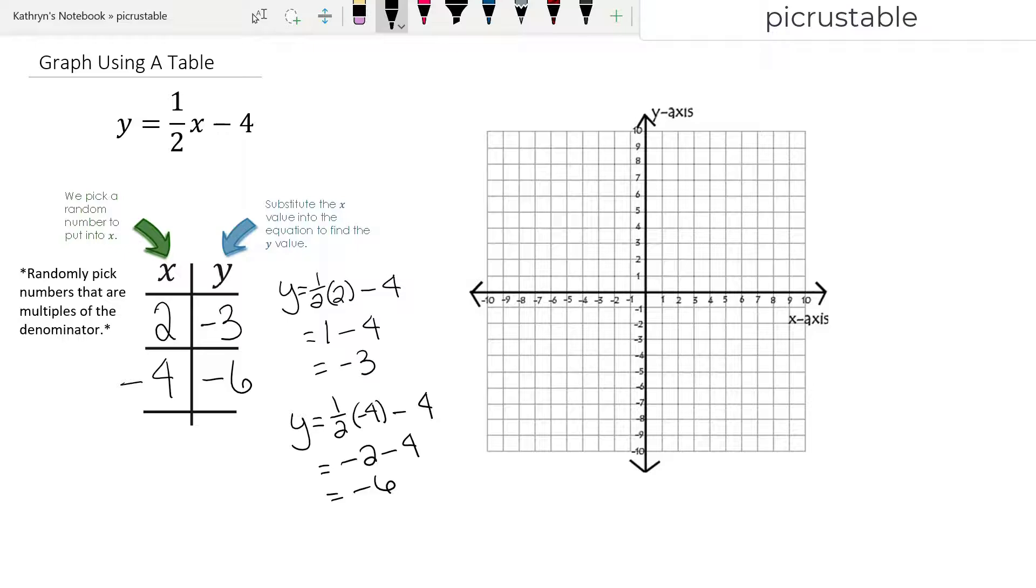Now I can hear some of you saying, how did you get negative 2? Well, let me just make an arrow here. I have 1 half times negative 4. I'm going to rewrite that as 1 half times negative 4 over 1. When we multiply fractions, we multiply straight across, which is negative 4 over 2, and negative 4 over 2 is negative 2.